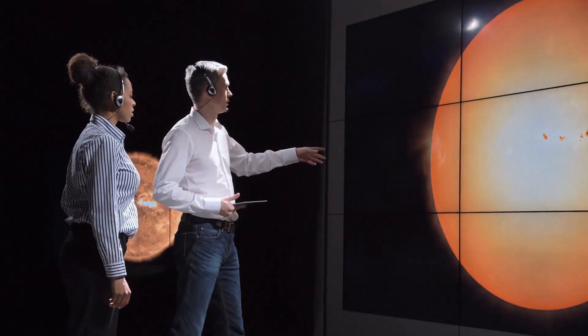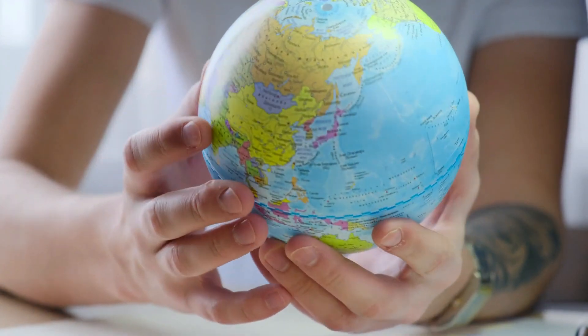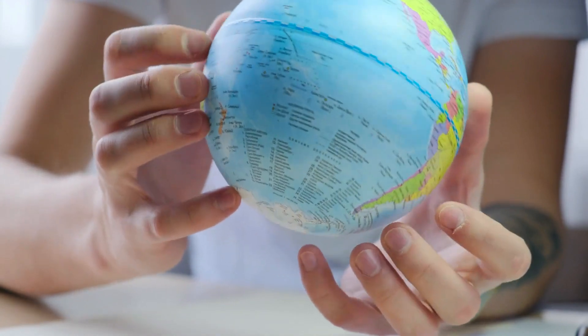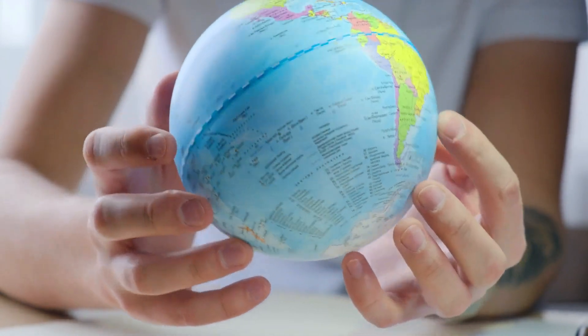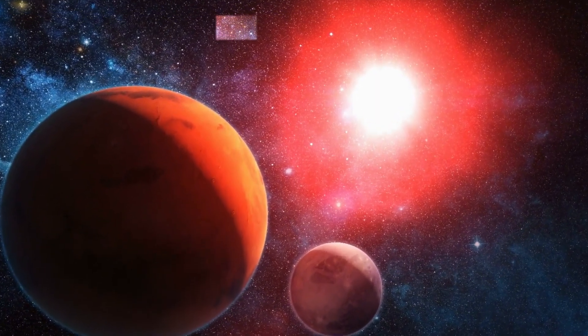For a long time, scientists have been looking for exoplanets where humanity could potentially exist outside of Earth. Despite the fact that we know there isn't another planet exactly like Earth where life might exist, there are hundreds of millions of those planets out there, and more are being discovered every day.